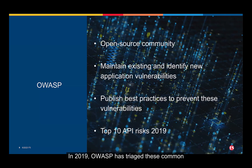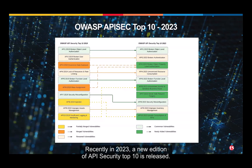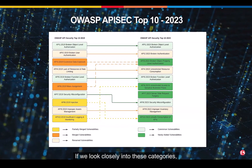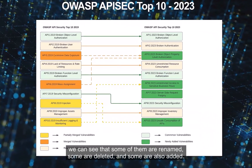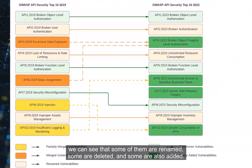In 2019, OWASP triaged these common issues into 10 categories and released the first edition of the API Security Top 10. And recently in 2023, a new edition of the API Security Top 10 was released. If we look closely into these categories, we can see that some of them are renamed, some are deleted, and some are also added.